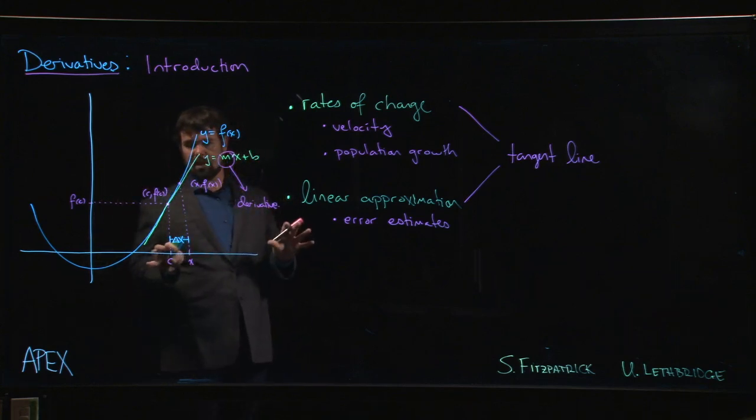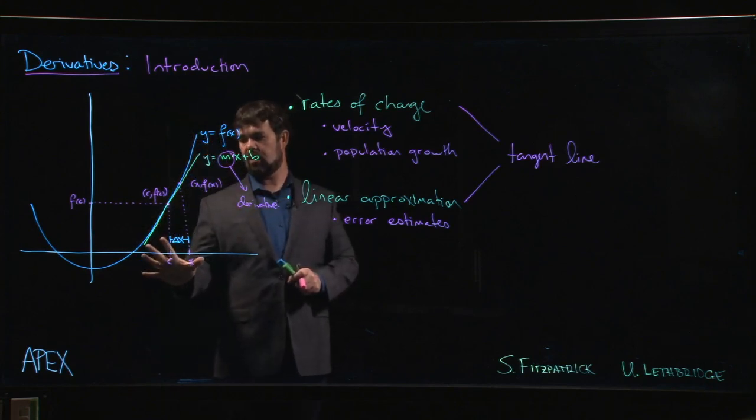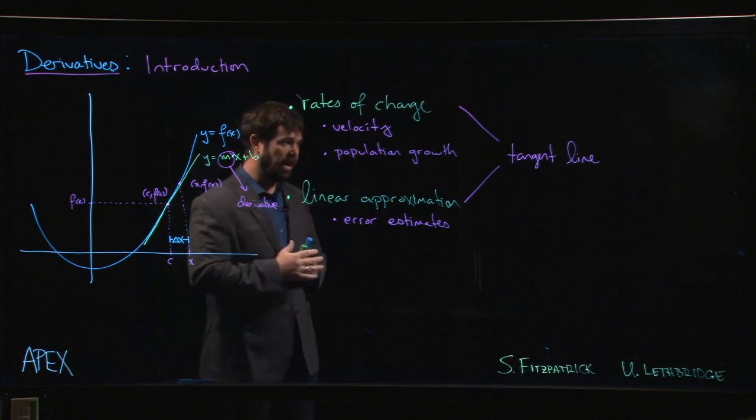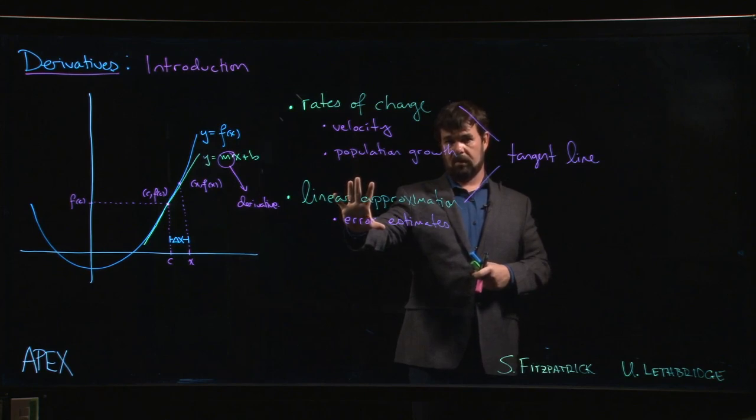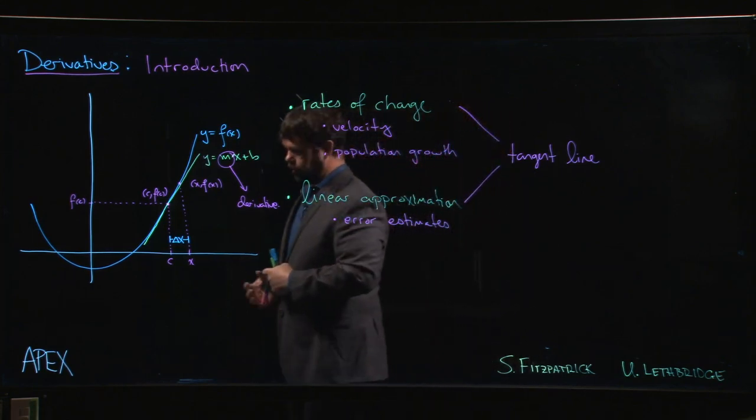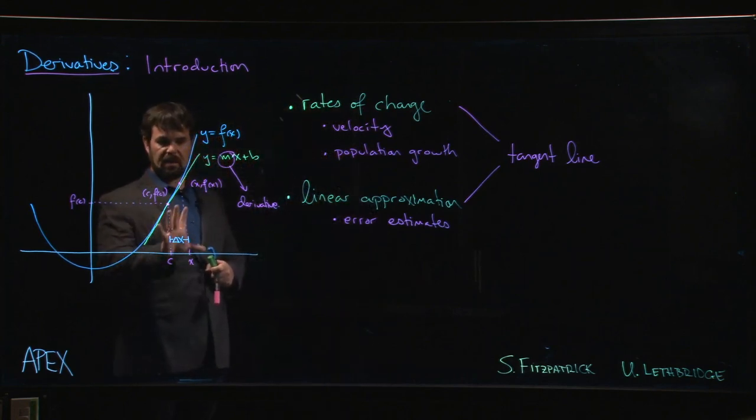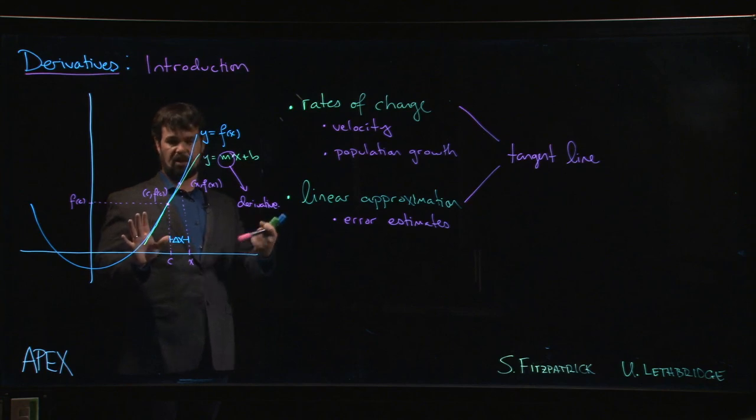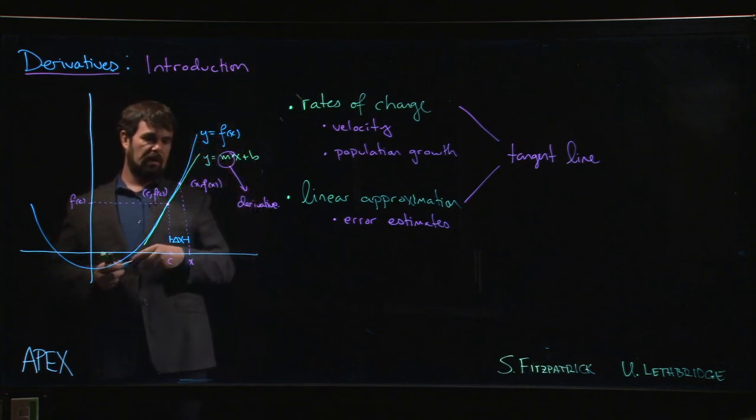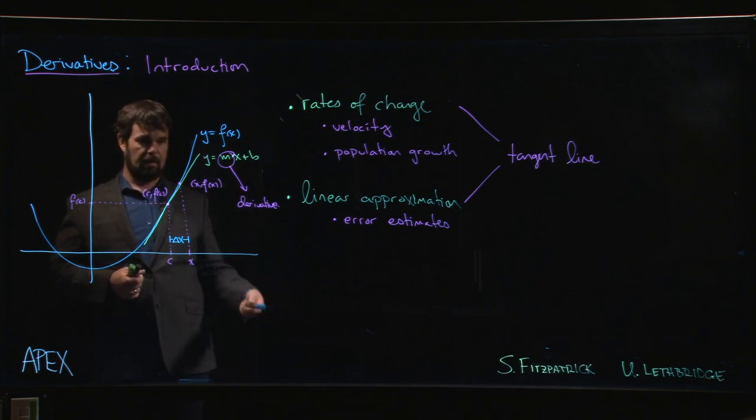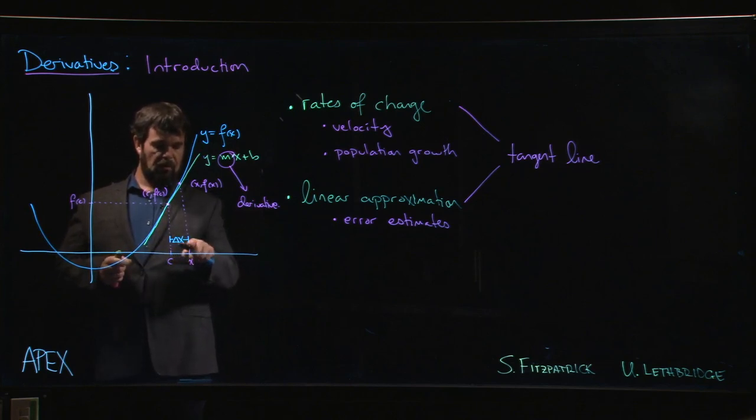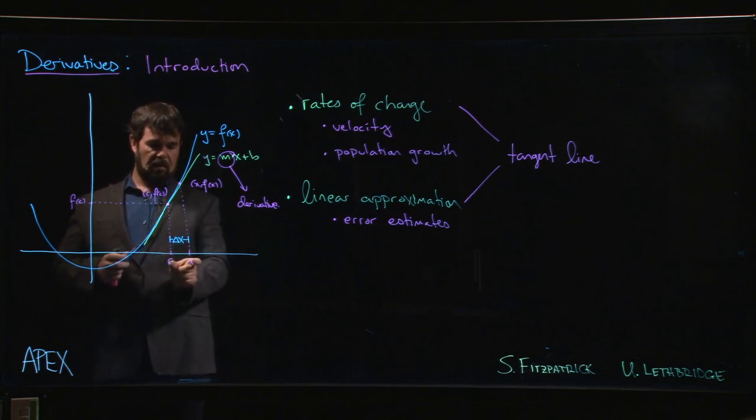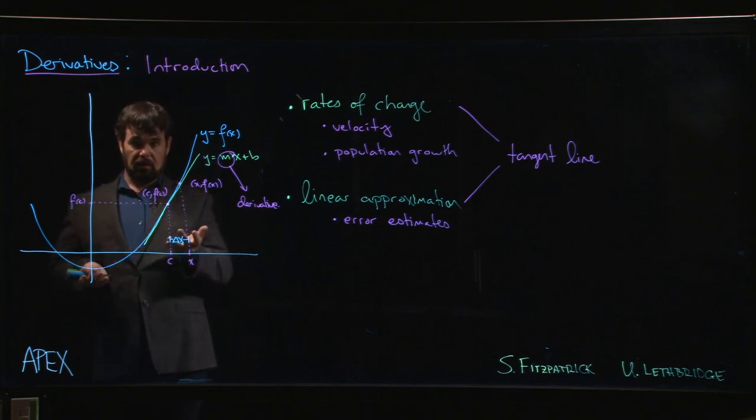This idea of a tangent line gives us a way of understanding these kinds of modeling problems that we might encounter in the sciences or some real-world problem, because this tangent line is in some sense giving you this idea of a rate of change or velocity. If this graph were plotting position as a function of time, what we have here is over some interval we make some change in our input variable, some delta x, and we work out what the resulting change in y is.